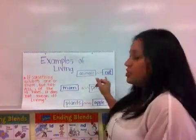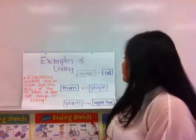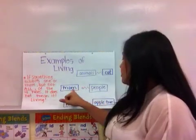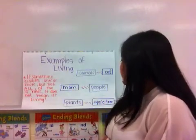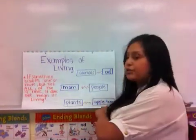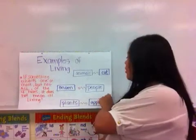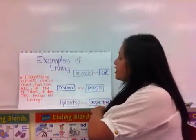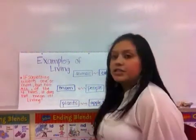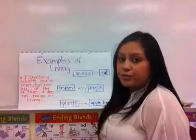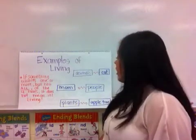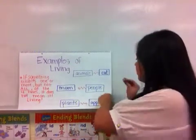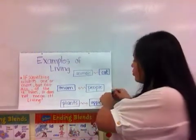Examples of living things are animals such as cats, people such as your mom, or plants such as apple trees. All of these exhibit traits of living — they all need food, air, and water to live, and they also reproduce.